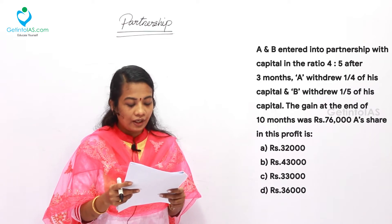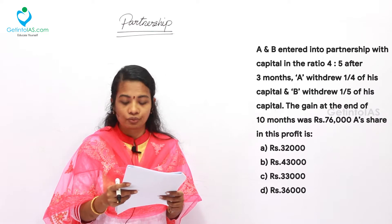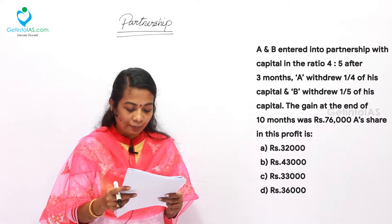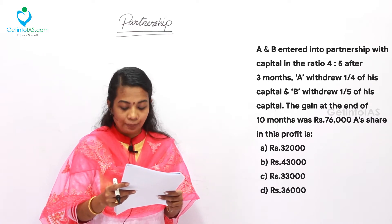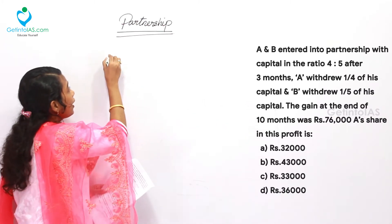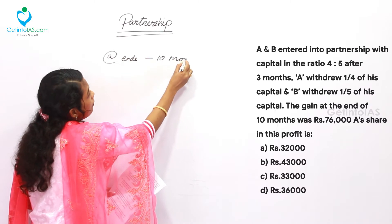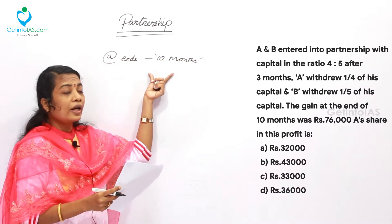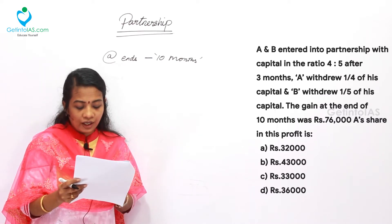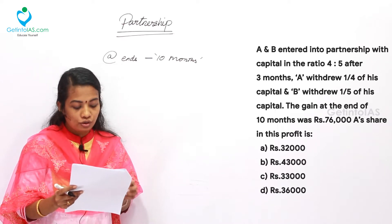The next question: A and B entered into a partnership with capital in the ratio of 4 to 5. After 3 months, A withdrew one-fourth of his capital and B withdrew one-fifth of his capital. The gain at the end of 10 months was Rs. 76,000. Find A's share in this profit.